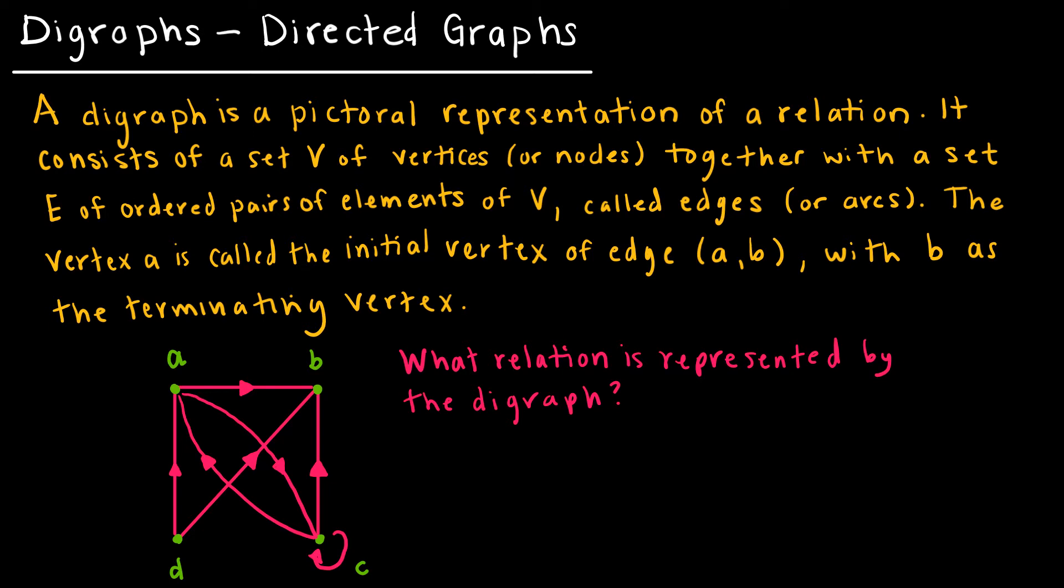So if I wanted to look at what relation is represented by the digraph, I would say the relation is, and I'm going to start with A so that I try to keep it as organized as possible so I don't forget anything. But A here has an arrow going towards B. So A, B is an ordered pair in my relation.